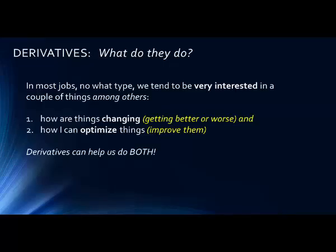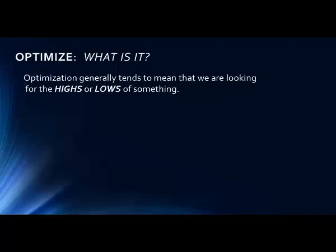Optimizing things means you can maximize or minimize them. In a business, we might want to maximize our sales while minimizing our costs. Both of those are optimization functions. Derivatives can help us do both, or can at least help us figure out where things are happening, and they work in a fairly easy and intuitive way.